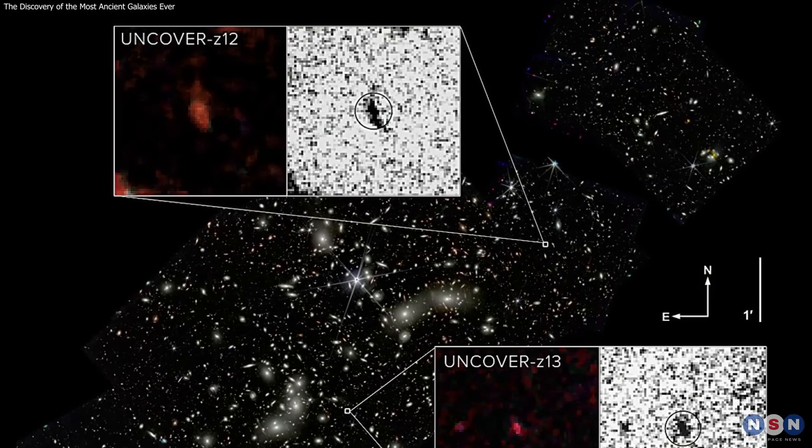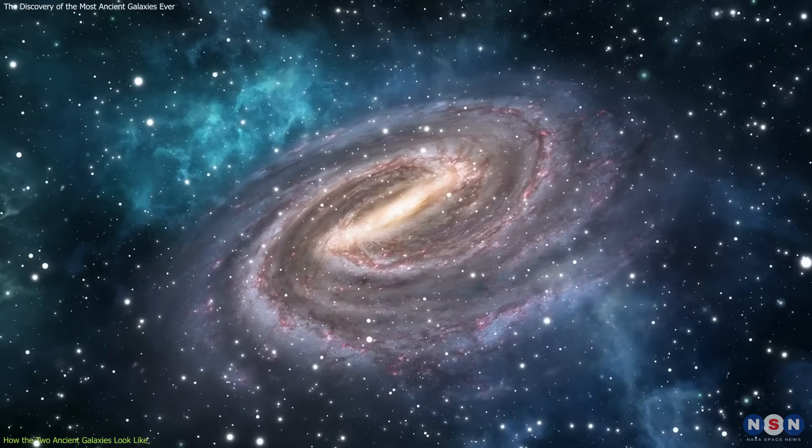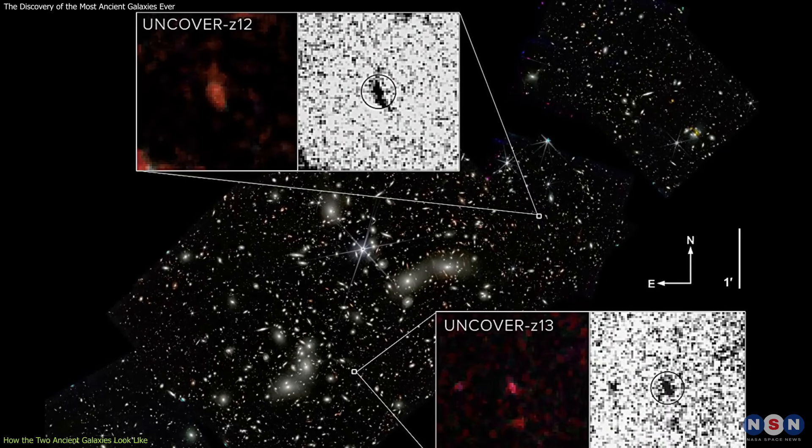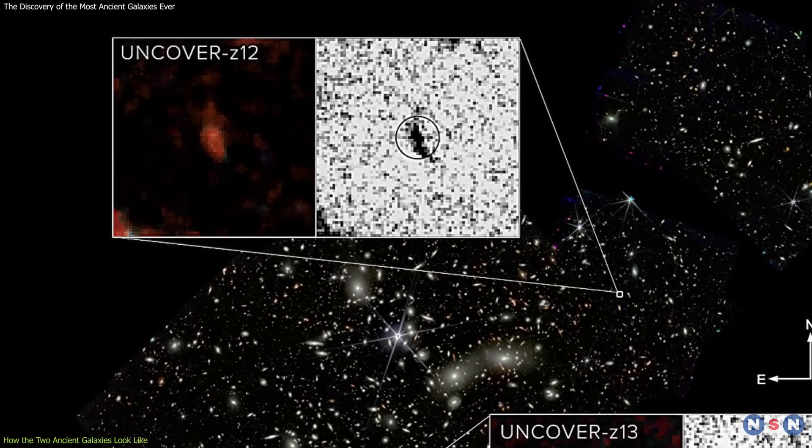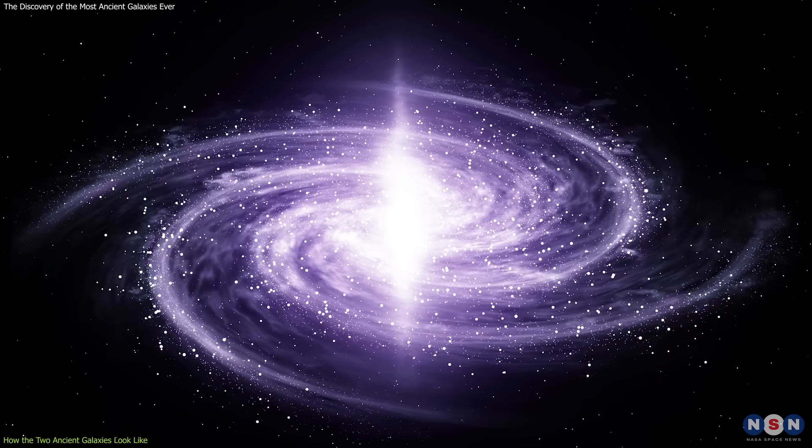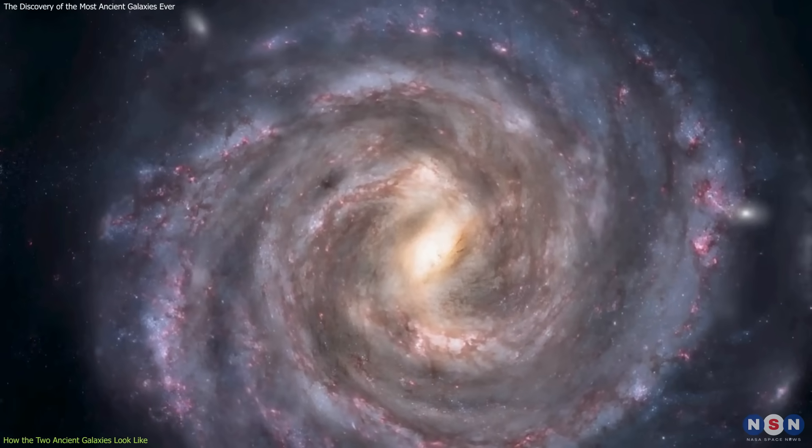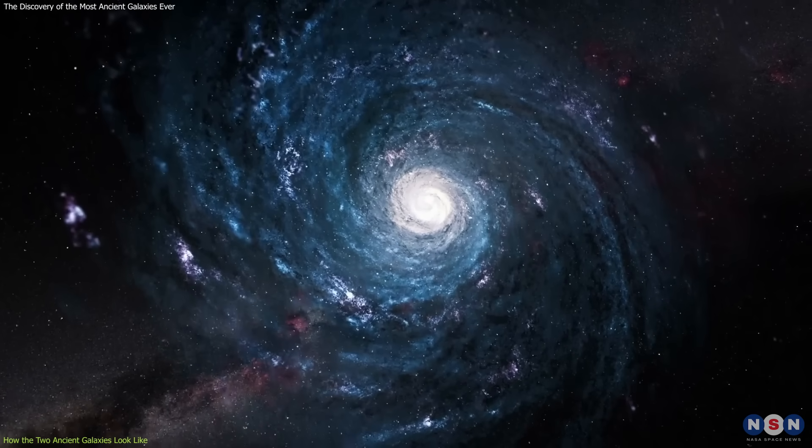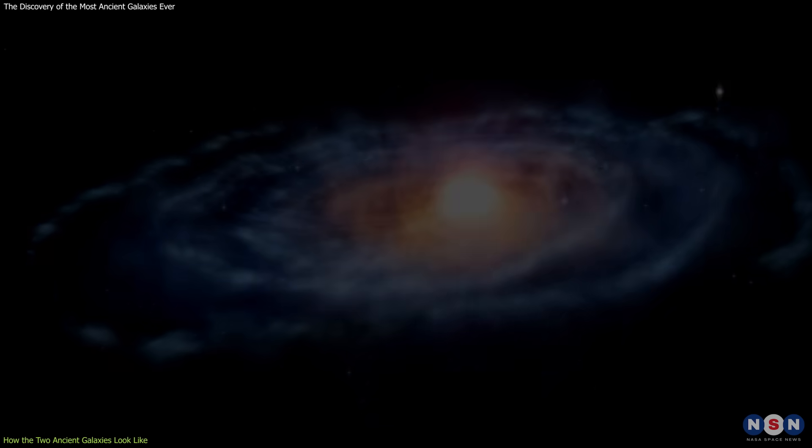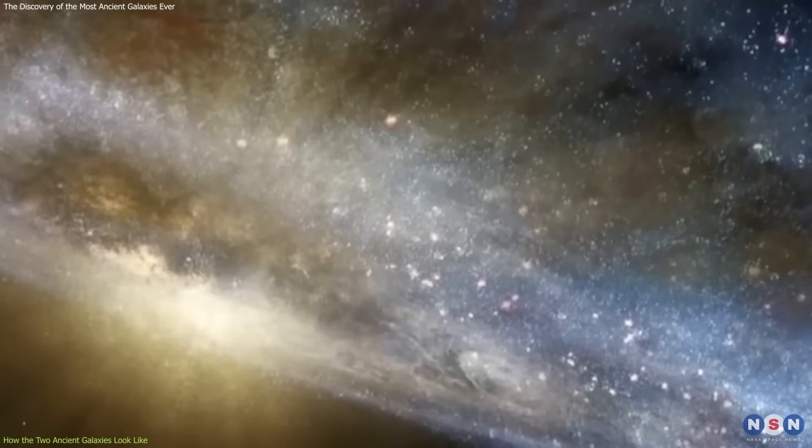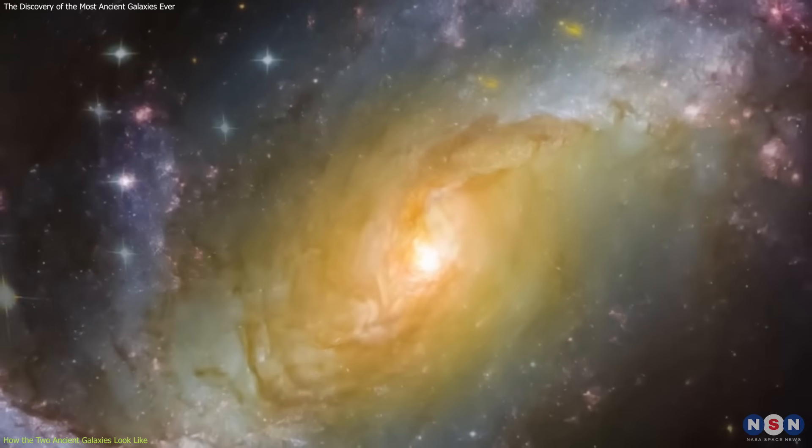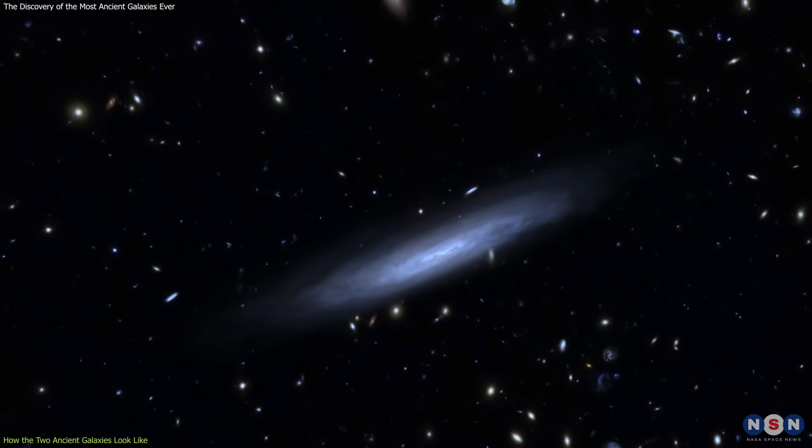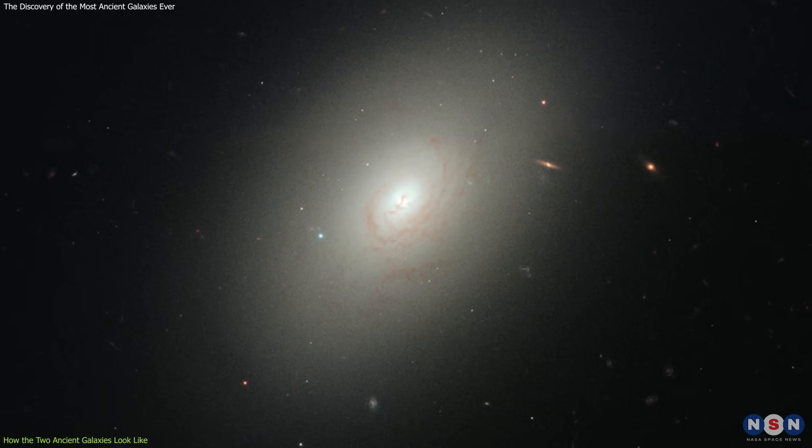What do the two galaxies look like? How do they compare and contrast with other known distant galaxies and with the galaxies in the present-day universe? The two galaxies have very different appearances and characteristics, which reflect their different stages of evolution and history. The second most distant galaxy, named Uncover Z12, is very small, compact, and round, with a diameter of only about 1,500 light-years, which is about 20 times smaller than the Milky Way. It is also very bright, blue, and hot, with a temperature of about 40,000 degrees Celsius, which is about eight times hotter than the sun. It has a very high star formation rate of about 100 solar masses per year, which means that it is producing new stars at a very fast pace, consuming its gas reservoir in a short time. This galaxy is likely a young and pristine galaxy, one of the first ones to form in the universe, and it may be the progenitor of the massive elliptical galaxies that we see today.